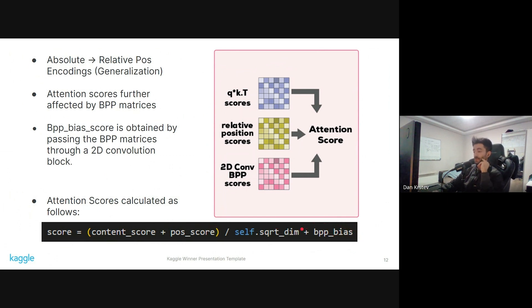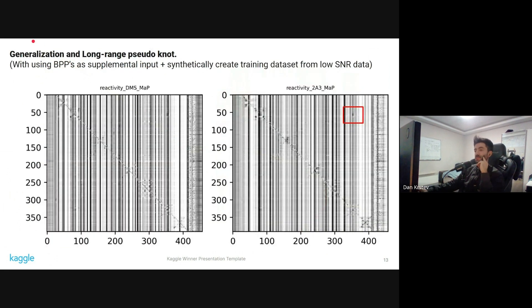So the attention score is just the content score, which is queries times the keys transposed. We then add the relative positional score and finally the base pair probability bias. We can see that this is the generalization plot. We can see that the model can find the long-range pseudoknot. There were some discussions, and I also thought about this during the competition, because I didn't know if, okay, so the base pair probability matrices are created with software that cannot inherently detect pseudoknots, so that bias is going to be transferred into the model. So there was a discussion whether the pseudoknot detection is going to be reduced if we use BPPs. But as we can see in this particular case, BPPs just didn't affect the pseudoknot. We can clearly see it, and we can also see that the model generalizes well beyond the 206 position onwards.